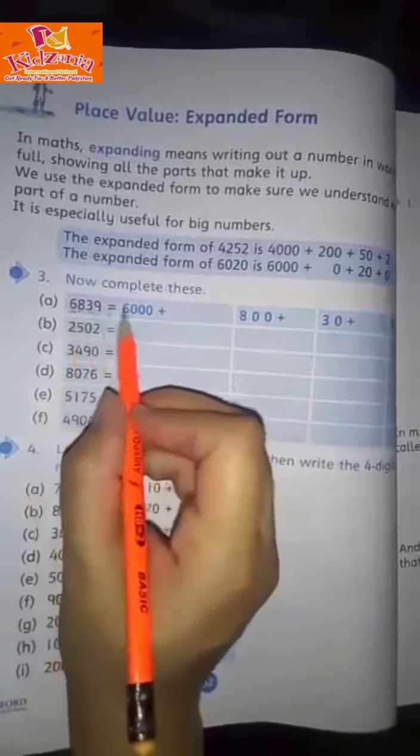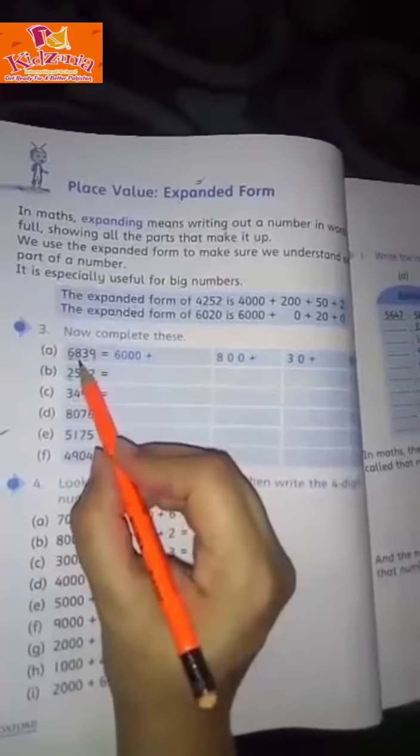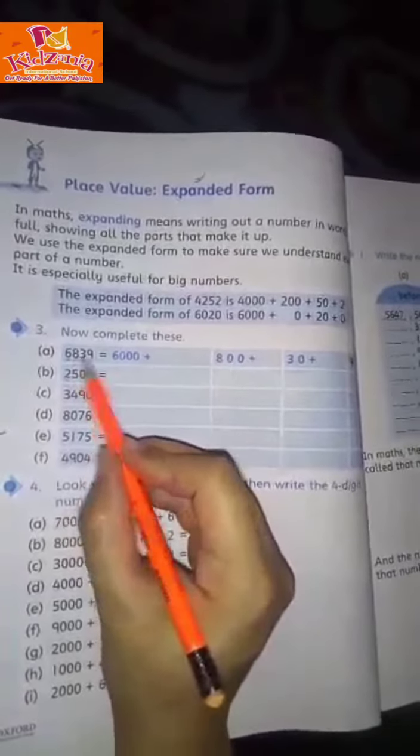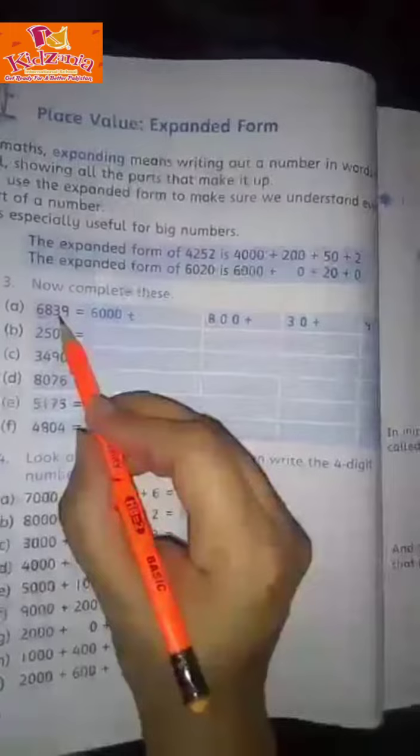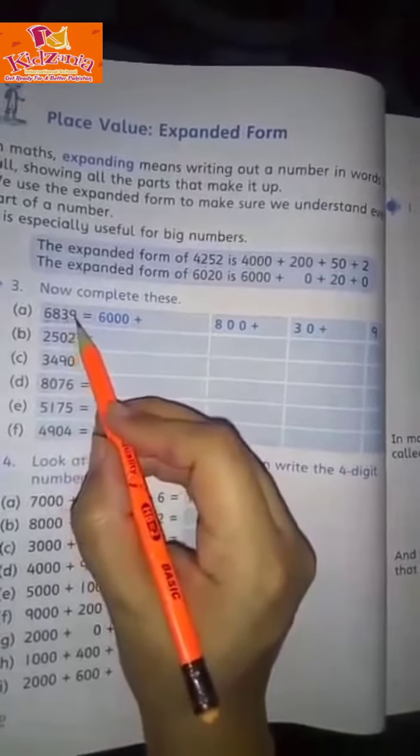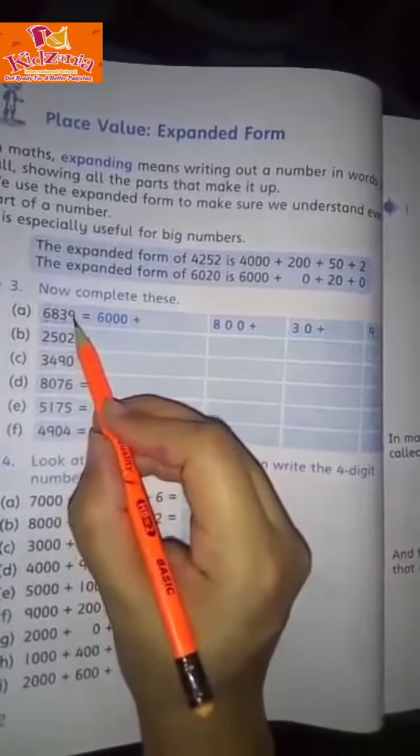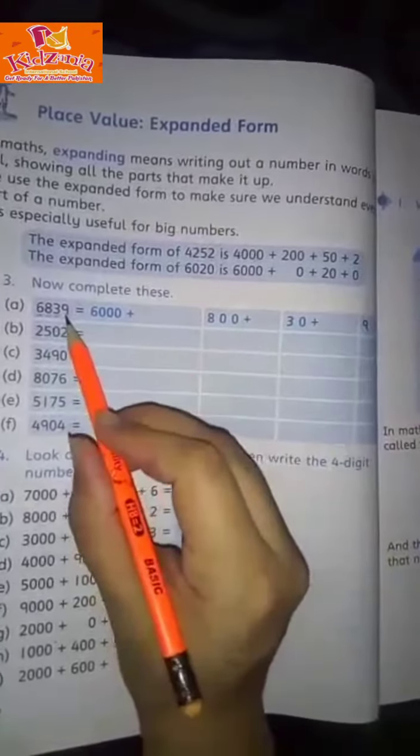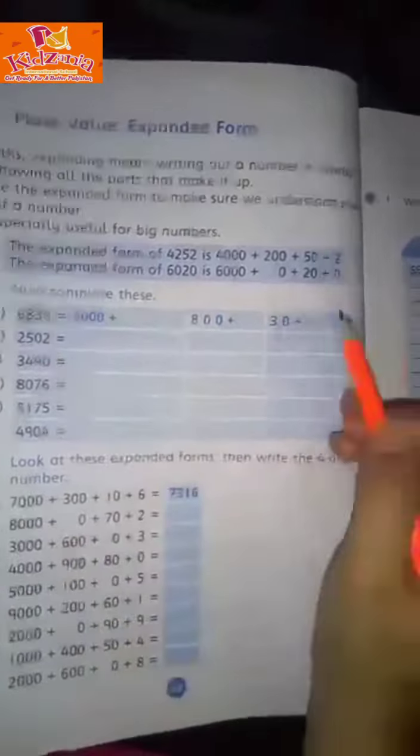So we write 6,000. 8 is in the hundreds place—ones, tens, and hundreds—so we write 800 plus. 3 is in the tens place—ones, tens—so we write 30. 9 is in the ones place, so we write 9.